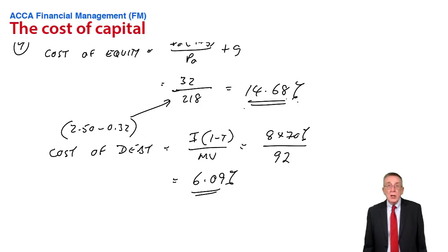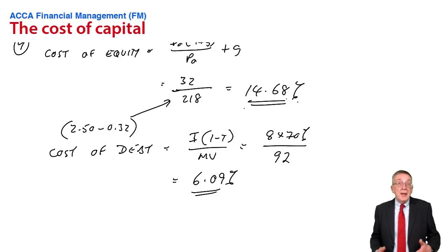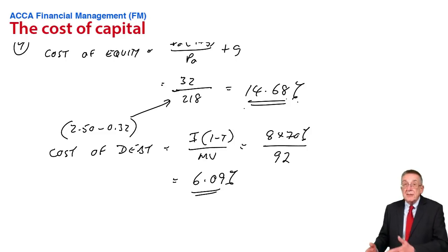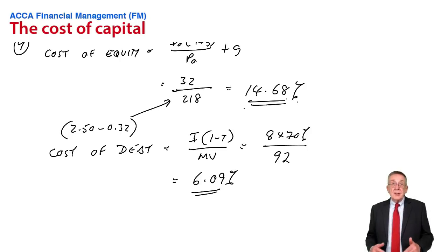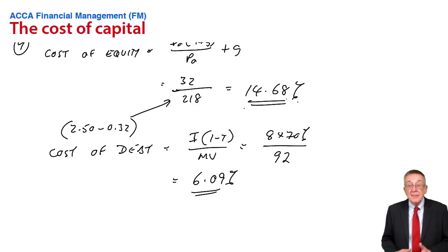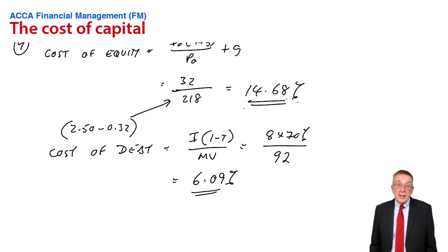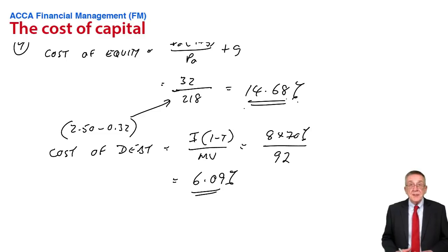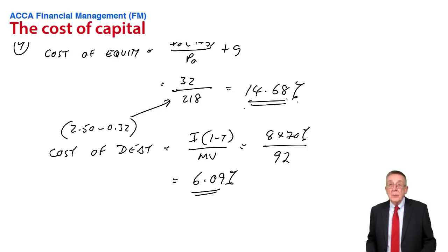I'm not surprised the cost of debt is lower. The cost of debt is lower for two reasons. Firstly, investors will be happy with a lower return because there's less risk. Debt investors are getting fixed interest each year, it's less risky than equity investors where their dividend is not certain. The cost of debt will be even lower because it gets tax relief. Dividends don't get tax relief. This company, part of its money is costing it 14.68%, part of it is costing it 6.09%. We want an overall cost, we take a weighted average.